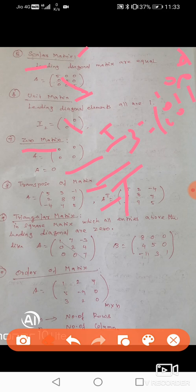Triangular matrix: In a square matrix, all elements above the leading diagonal are 0 — that is the upper triangular matrix. Similarly, if elements below the leading diagonal are 0, it is a lower triangular matrix.